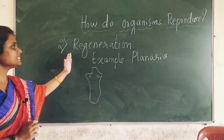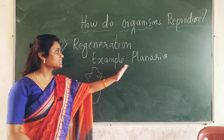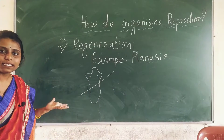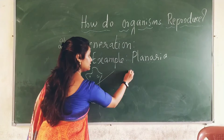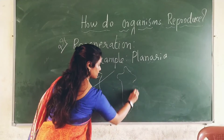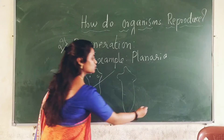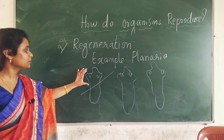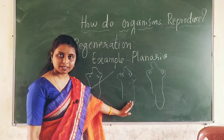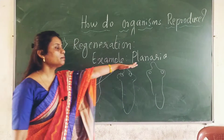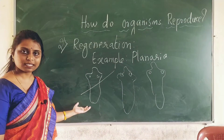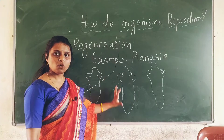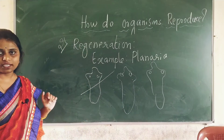The next type of asexual reproduction is regeneration. The example we study is planaria, which looks like a slipper. When planaria is accidentally cut into two parts, each part will grow into a full organism. The cut part regenerates into a whole organism — that is called regeneration. The example is planaria.